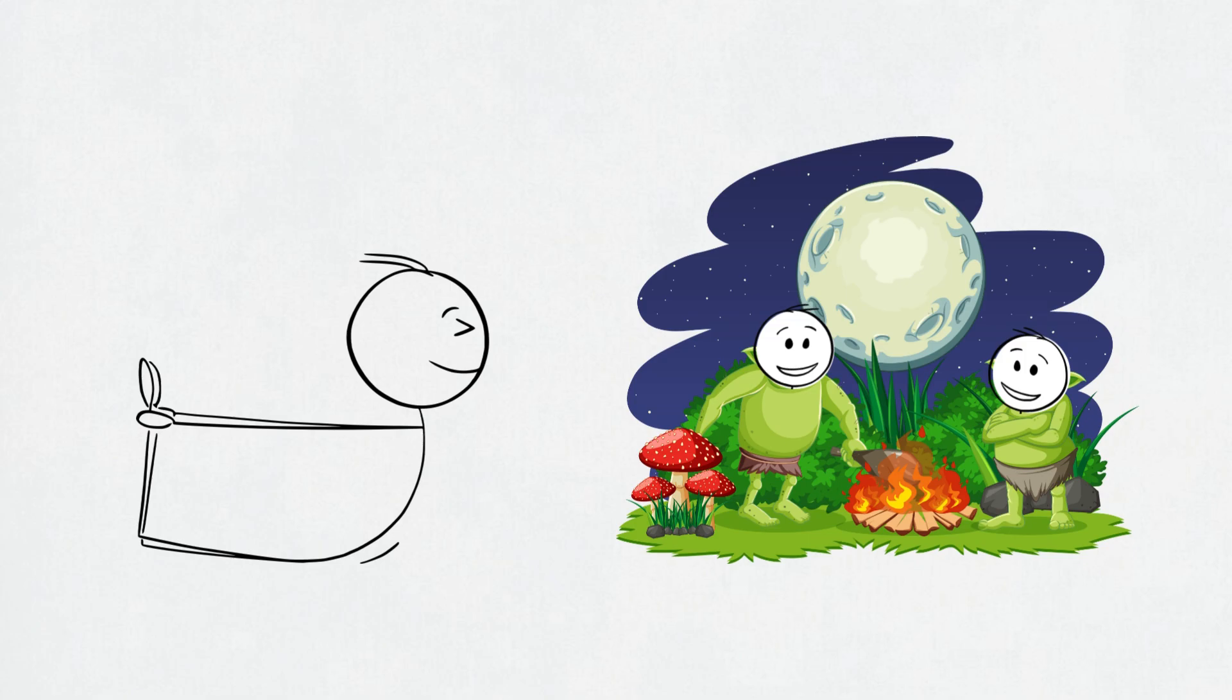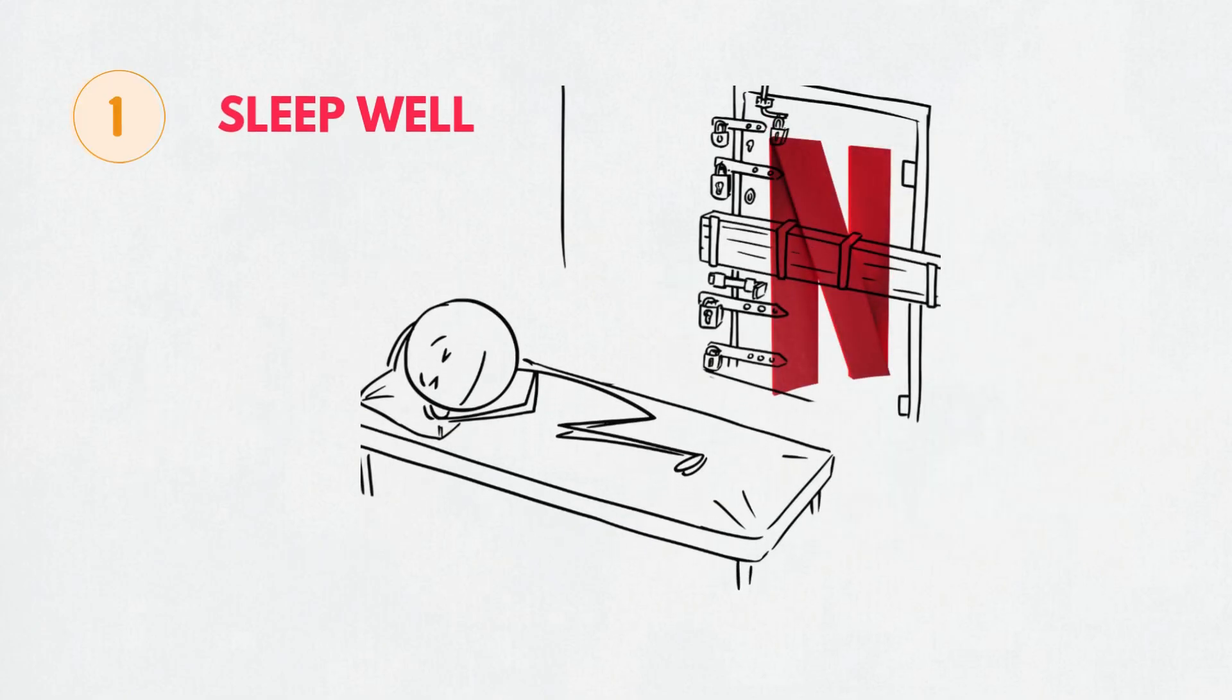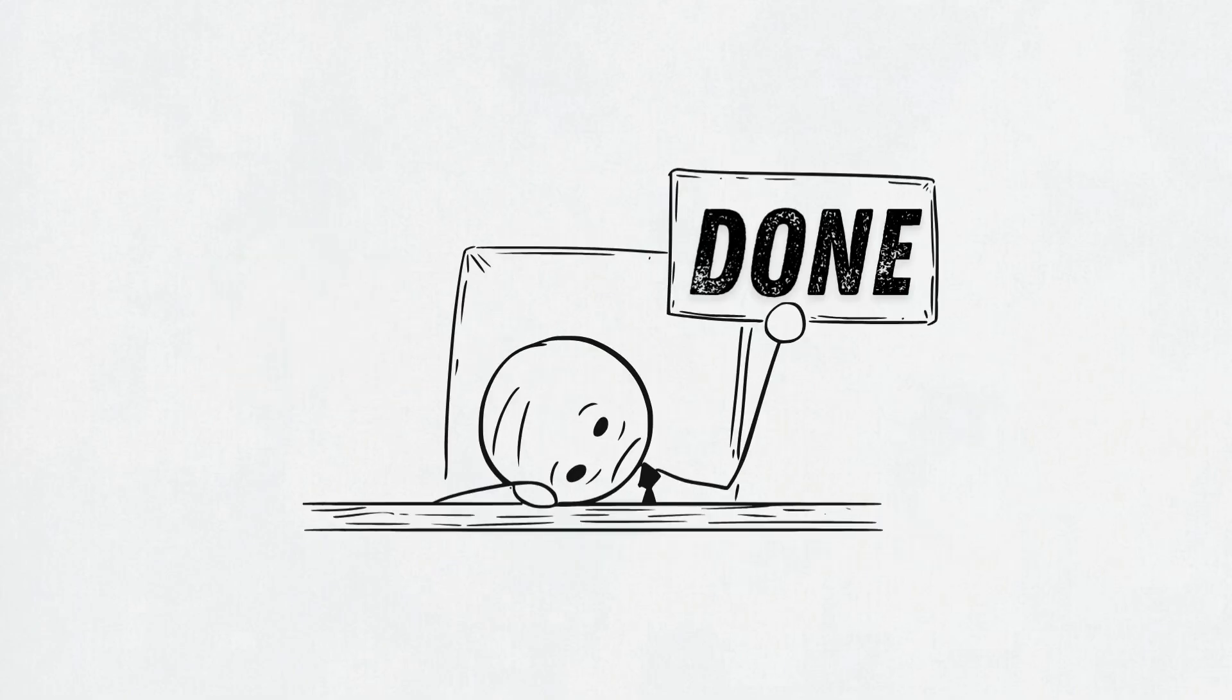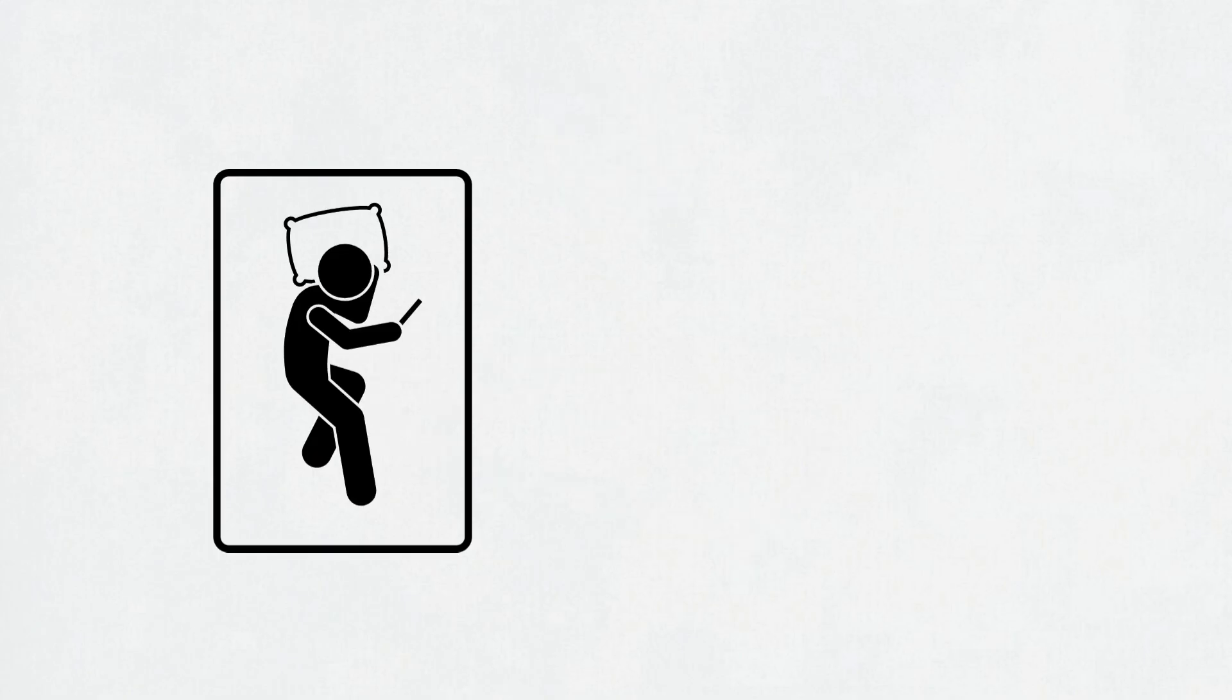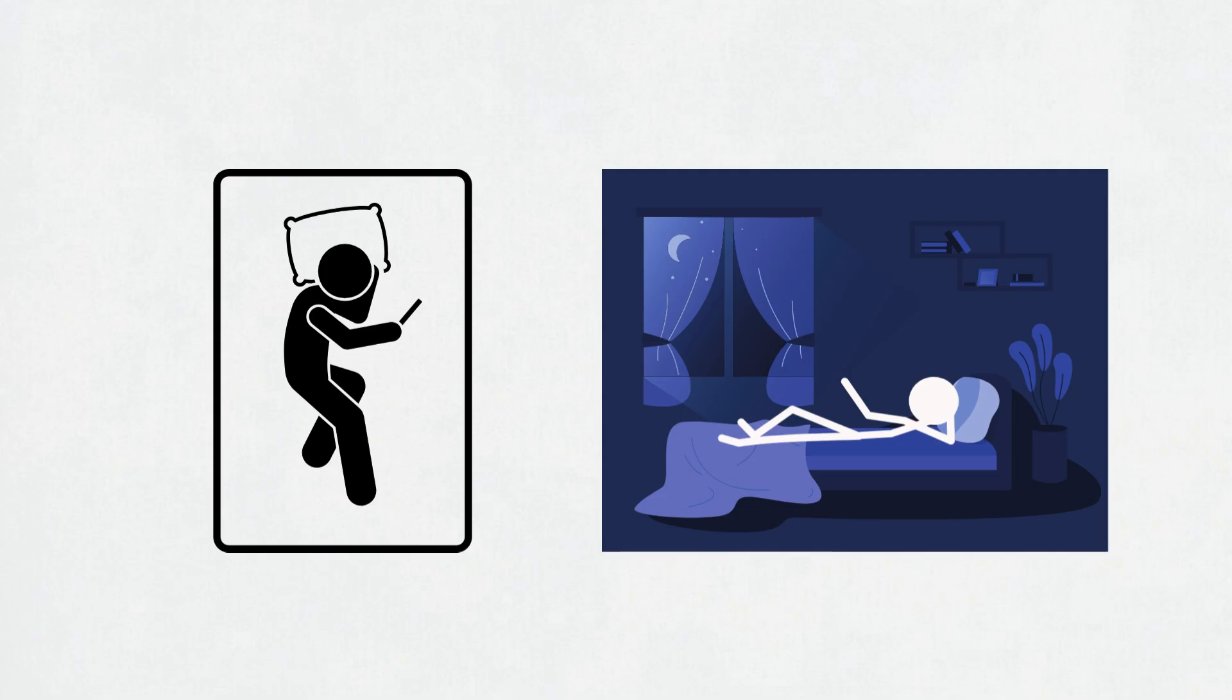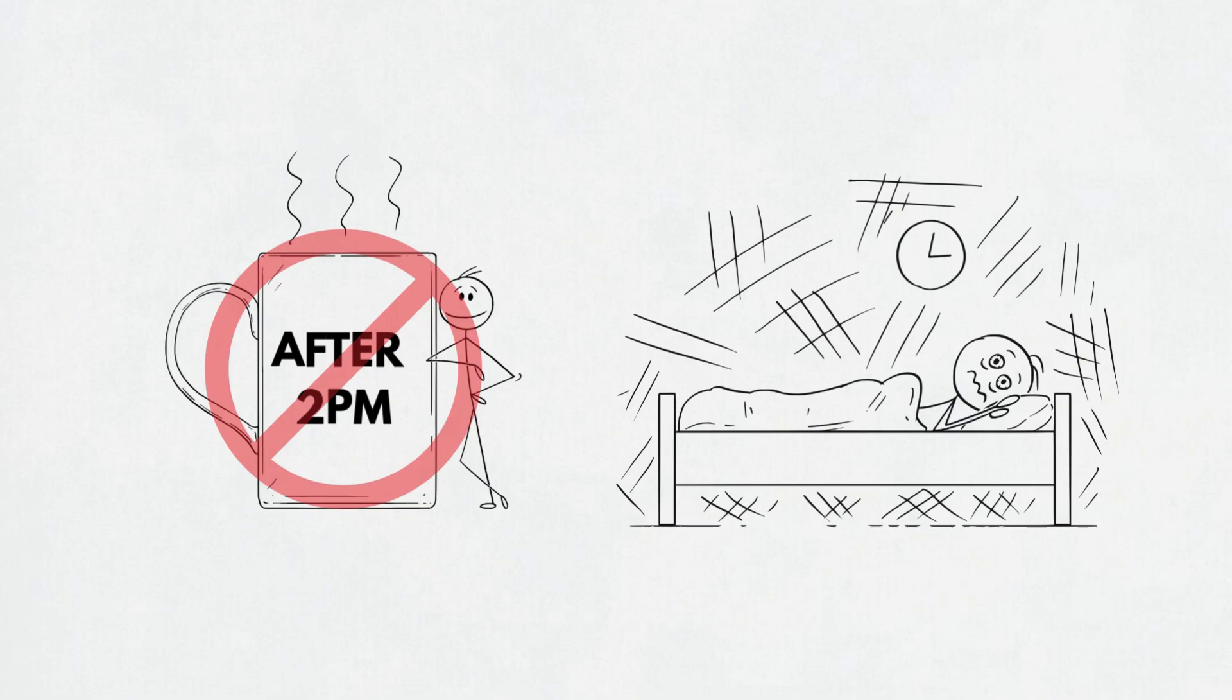Fix your body. AKA stop living like a goblin. First, sleep like you're not in a Netflix trap. No sleep means brain soup. Your focus system shuts down. Fix it with seven to nine hours of sleep. No screens before bed, a cool dark room, and no caffeine after 2 p.m. unless you want a 3 a.m. existential spiral.